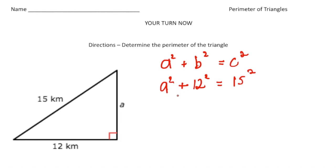And now when we simplify this, A squared is still A squared plus 12 squared is 144 and 15 squared is 225. And now we need to isolate the A squared. So I'm going to take away the 144 from both sides. So now we end up with A squared equals 81.